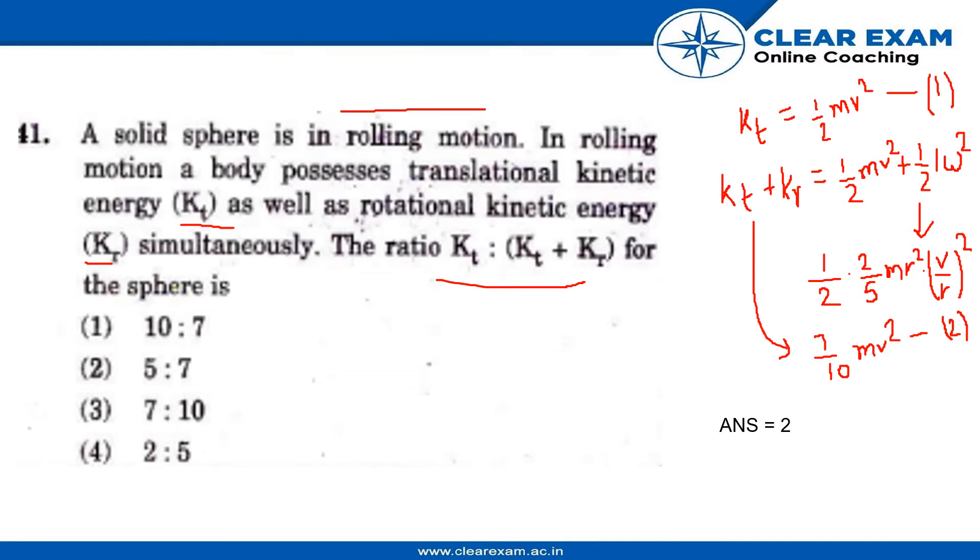Now for the solution, I have written the value of translational kinetic energy, which is given by half m v squared. The value of rotational kinetic energy is given by half I omega squared, which on expanding we will get to be this.